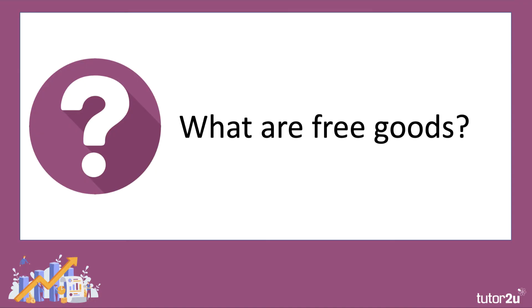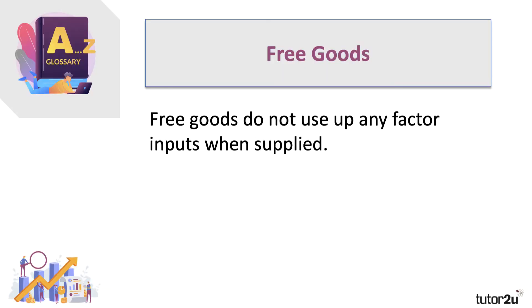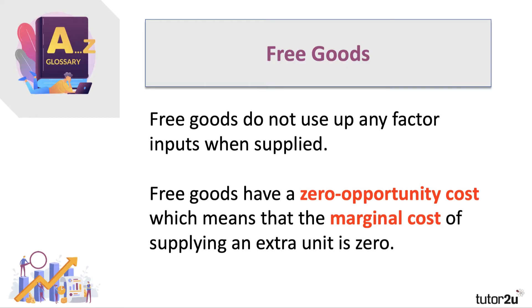A free good is defined as a product with a zero opportunity cost, which means that it can be consumed in as much quantity as needed without reducing its availability to others. Free goods are things which do not use up any factor input — land, labour, capital — at the point at which they're supplied. A free good has a zero opportunity cost, which means essentially that the marginal cost of supplying an extra unit of a free good is zero.